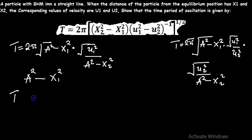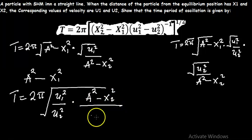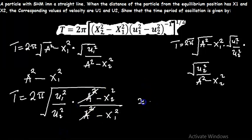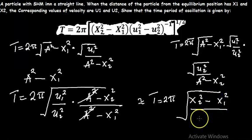Our time period is simply going to be 2π times the square root of v1 squared divided by v2 squared, multiplied by A squared minus x2 squared, divided by A squared minus x1 squared. You can leave it this way, but if you like, the common terms cancel each other, and you will be left with the time period simply equal to 2π times the square root of x2 squared minus x1 squared, divided by v1 squared minus v2 squared.